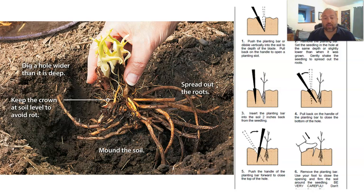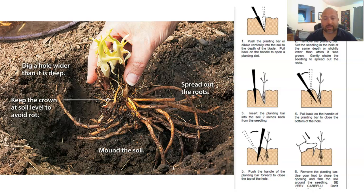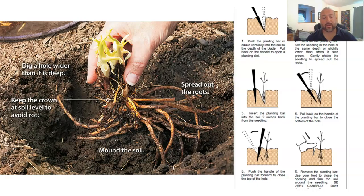When planting bare root seedlings, mound the soil and keep the crown at soil level to avoid crown rot. Dig the hole wider than it is deep so the roots have plenty of space to spread. Backfill gently to make sure the roots are covered without burying any part of the trunk, and water while backfilling.